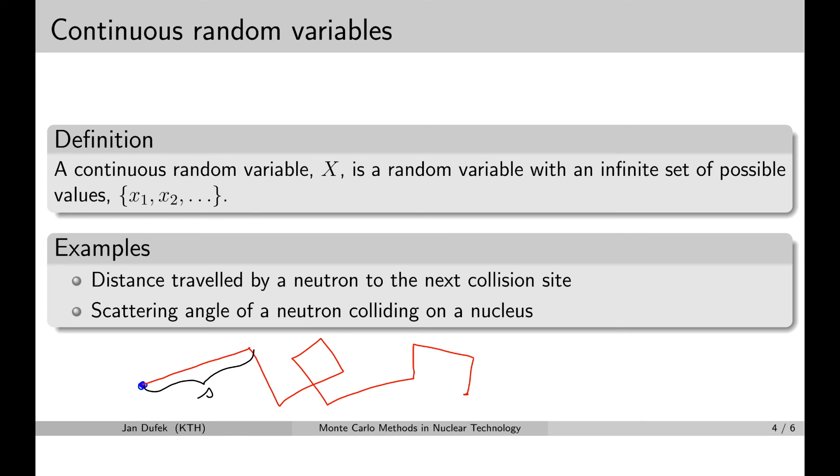And another example of a continuous random variable could be the scattering angle. Now, for simplicity, let's just assume that we consider only two-dimensional neutron transport on xy plane. So, in this case the scattering angle would be here. And there are infinitely many values from 0 to 360 degrees that the scattering angle can take on. Therefore, this variable is also a continuous random variable.